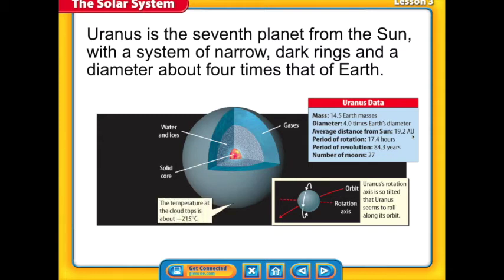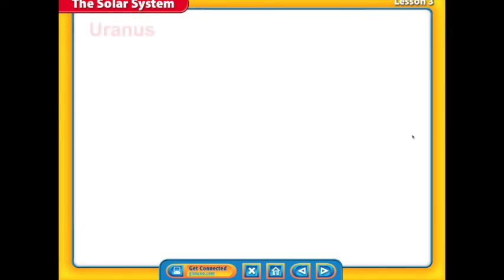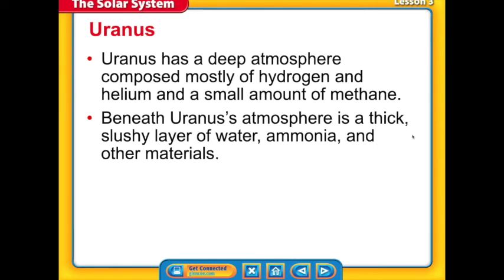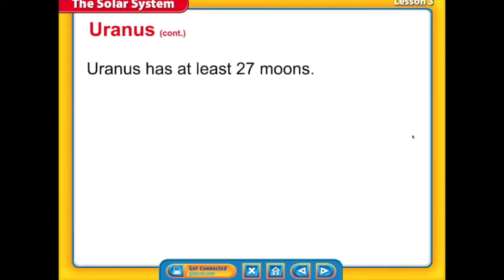Let's continue to talk about Uranus. It is very cold in the Uranus system. The temperature at the cloud tops is negative 215 degrees Celsius. This image shows Uranus with its rings and some of its moons. You can see how it is tilted over on its side. Uranus has a deep atmosphere composed mostly of hydrogen, helium, and a small amount of methane gas. Beneath Uranus's atmosphere is a thick, slushy layer of water, ammonia, and other materials. Uranus has a tilted axis of rotation that may have been caused by collision with a planet the size of planet Earth. Uranus has at least 27 moons as we mentioned before.